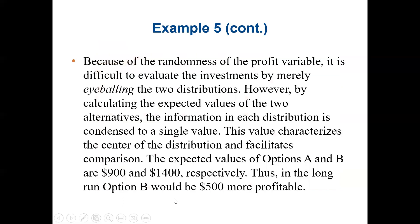Because of the randomness of the profit variable, it is difficult to evaluate the investment by merely eyeballing the two distributions. However, by calculating the expected values of the two alternatives, the information is condensed to a single value characterizing the center of the distribution. The expected values of options A and B are $900 and $1,400 respectively, so we choose option B.